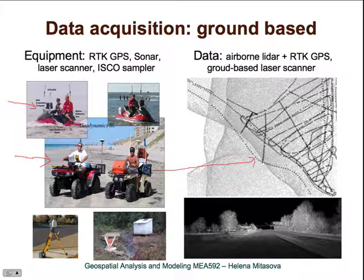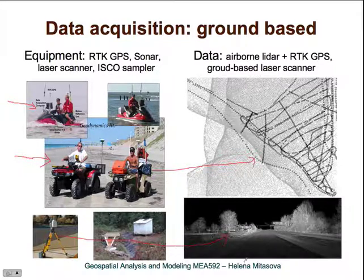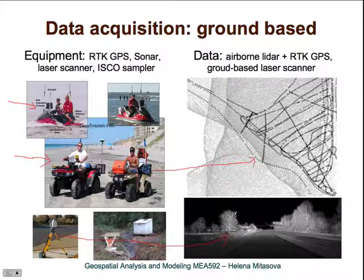This is how an on-ground laser scanner looks, and this would be the type of data that you get. This looks like an image, but it's not — it's a set of points. The gray shade represents intensity, specifically laser intensity.